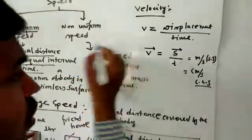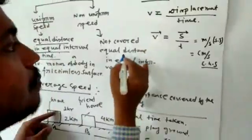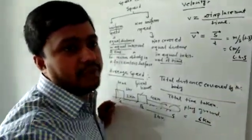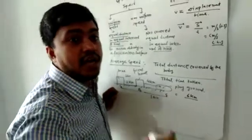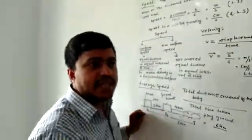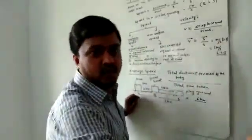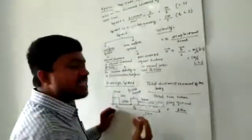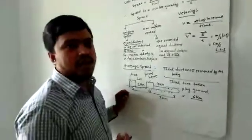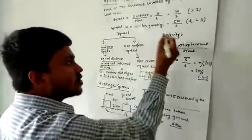Non-uniform speed means the particle does not cover equal distance in equal intervals of time — the time interval remains the same but the distance covered is different. For example, if the surface is rough, when the particle, object, or car starts its journey, one opposing force acts on the body, so the body does not cover equal distance in equal intervals of time. This is an example of non-uniform motion.